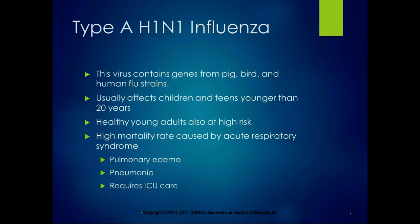Type A H1N1 is a virus that contains genes from pig, bird, and human flu strains — it's a mutant. It usually affects children and teens younger than 20, and healthy young adults are also at high risk. Unlike typical flu that kills older, weaker people, H1N1 kills younger, healthier people. The high mortality rate is caused by acute respiratory syndrome, pulmonary edema, and pneumonia, and many people have to be hospitalized in the ICU when they have H1N1. Get that vaccine.